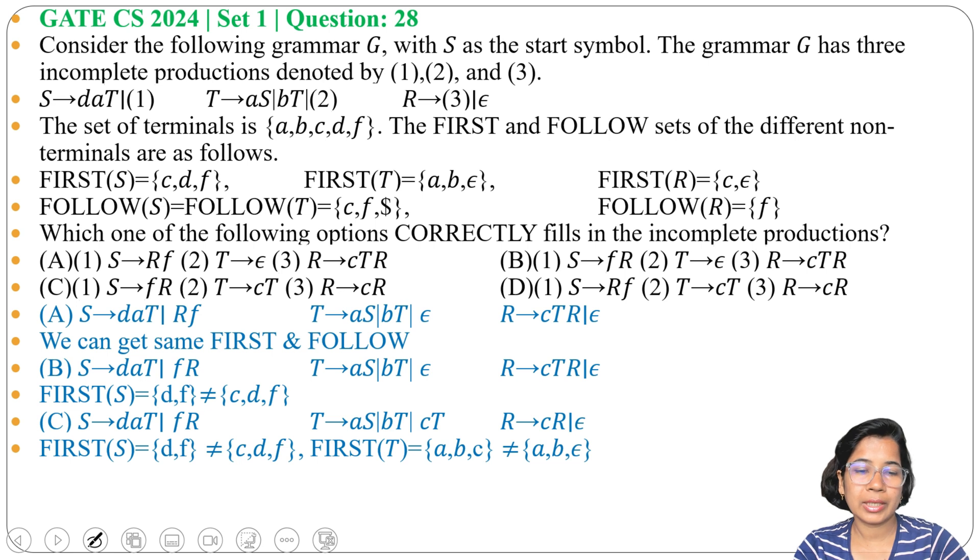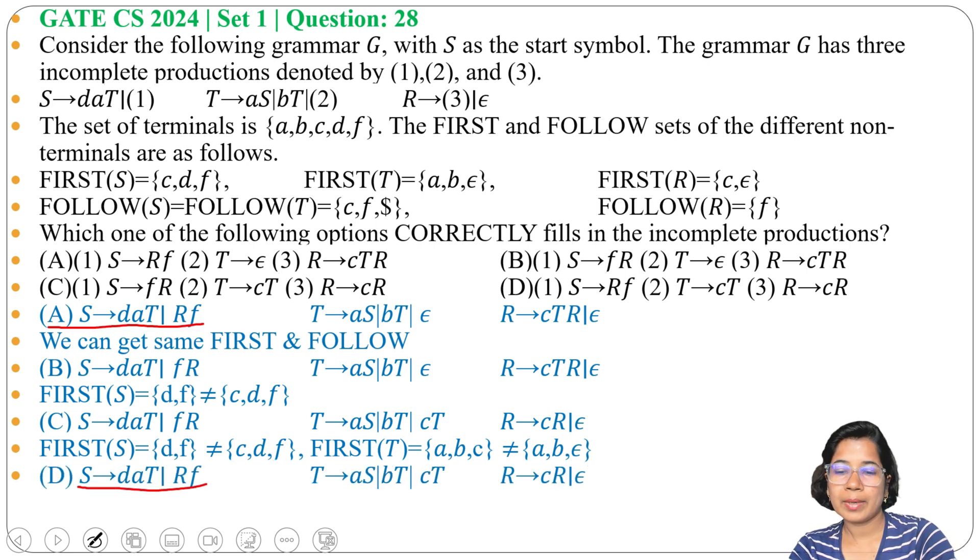Next check option D. In place of 1, write S→RF. In place of 2, T→CT. In place of 3, R→CR. First of S and follow of S are same if we are writing RF, right?